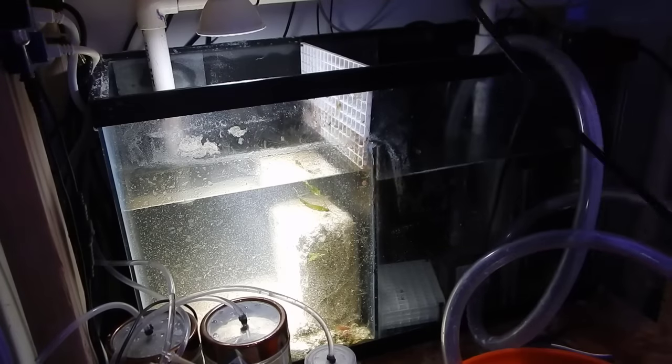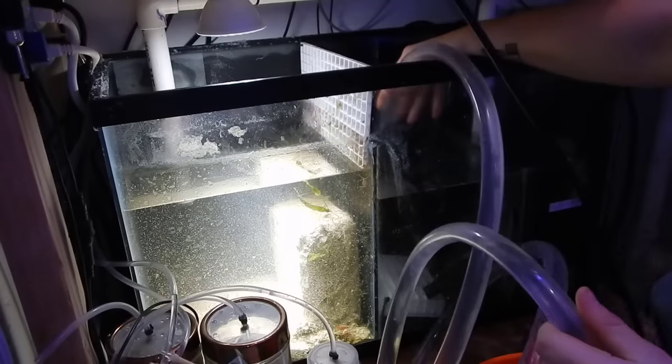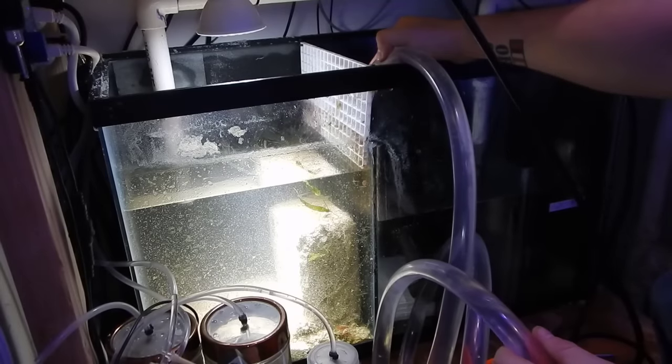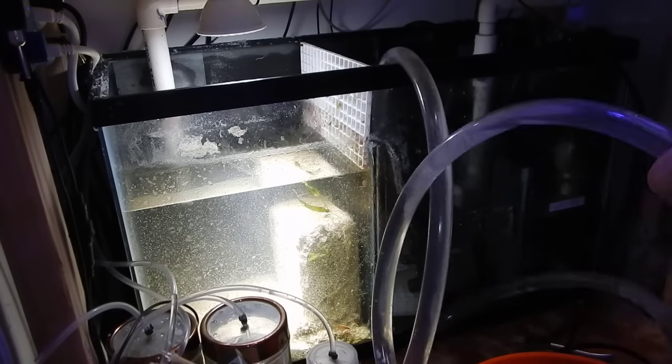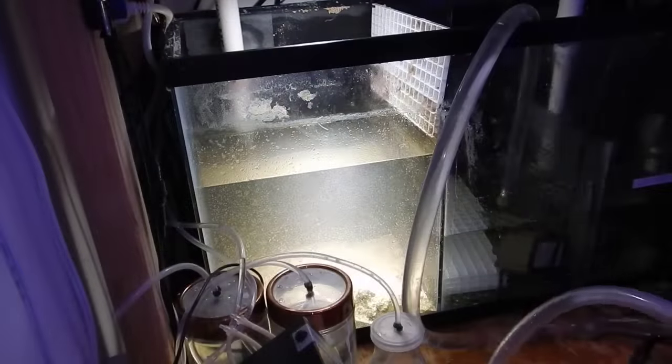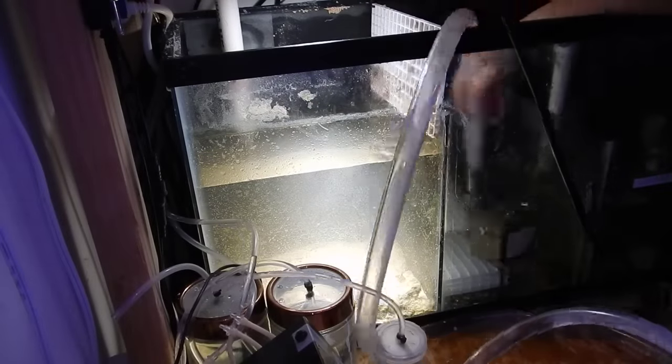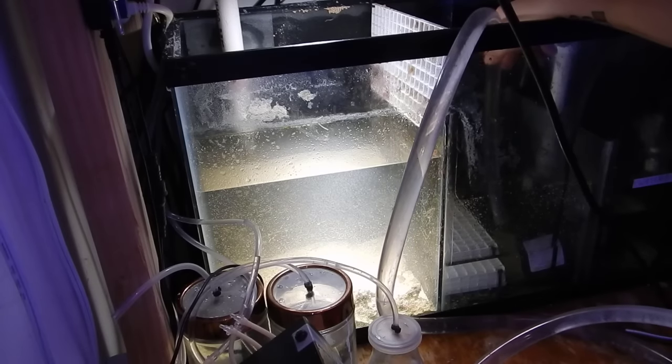Okay once that was done I went ahead and I pumped out about five gallons of water into a bucket that way I have a place to put the marine pier block while I'm doing this build. The last thing you want to do is leave it out in the air to kill all that beneficial bacteria so leaving it in the water that is actually in the sump will definitely be alright for the next few hours. Once I removed the marine pier block I went ahead and I pumped out as much water as I possibly could just basically making the tank light enough to move it into the other room.